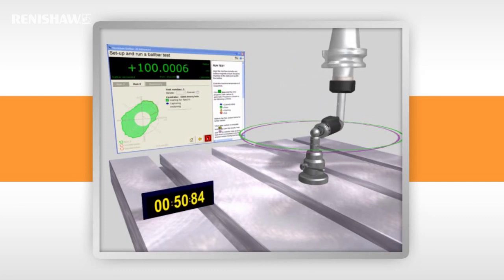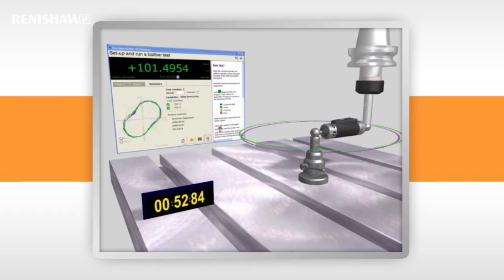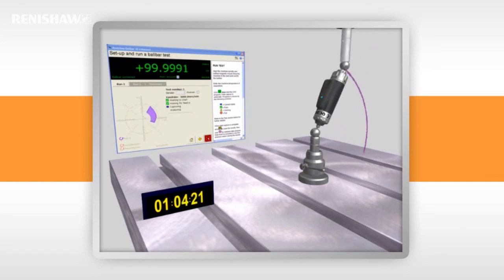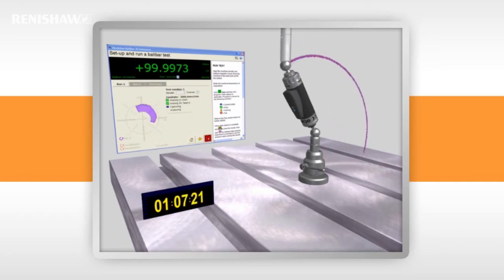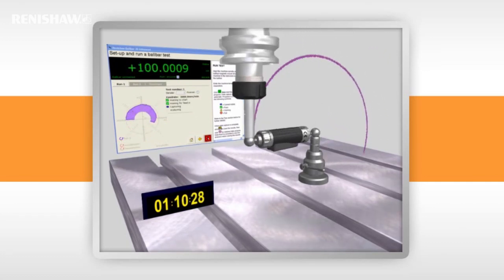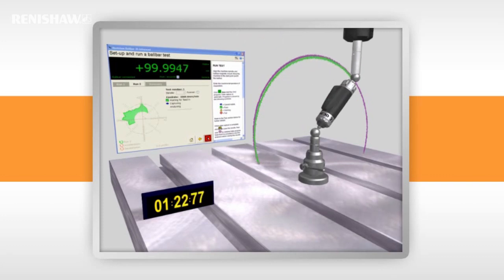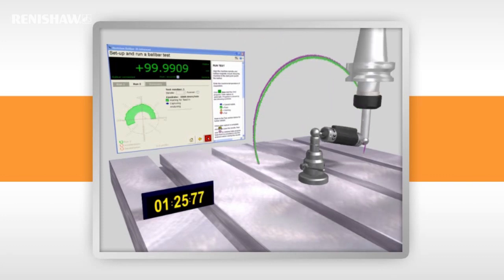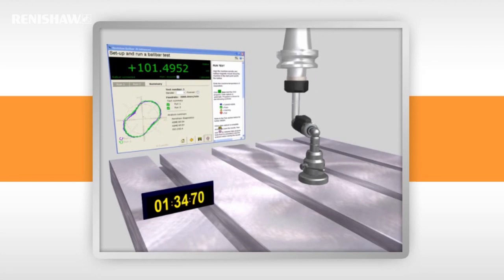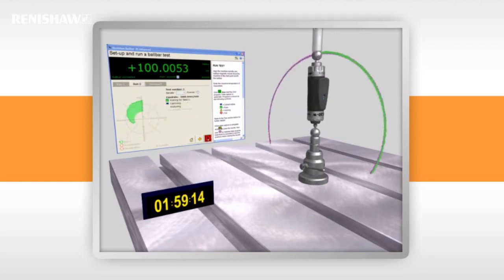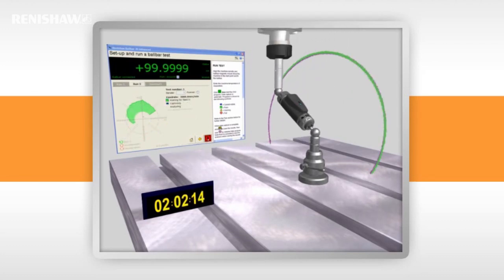Here you see a 360 degree XY test, followed by a downwards arc to the start of the ZX partial arc, then the ZX partial arc test itself, followed by a 90 degree arc to the start of the YZ partial arc test. You then go through the YZ test and finally return to the start point.